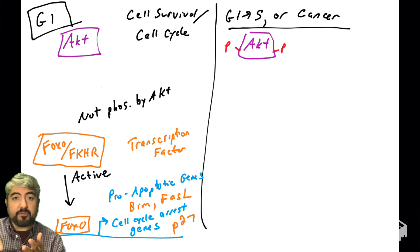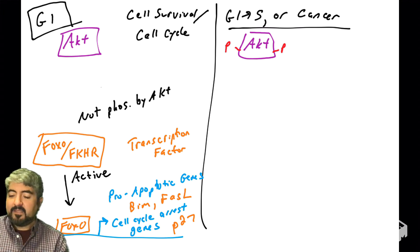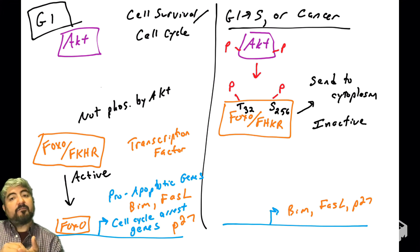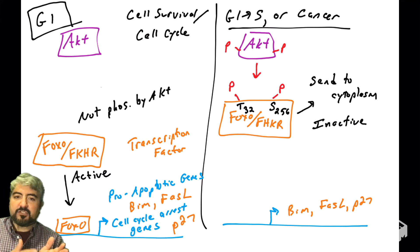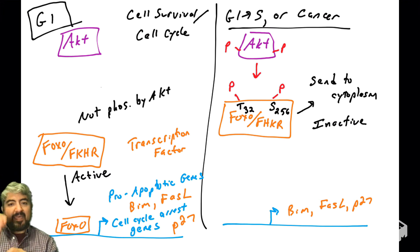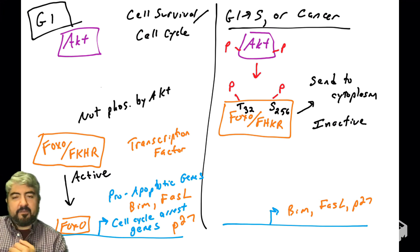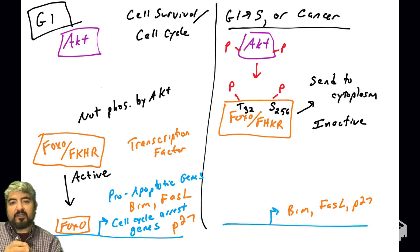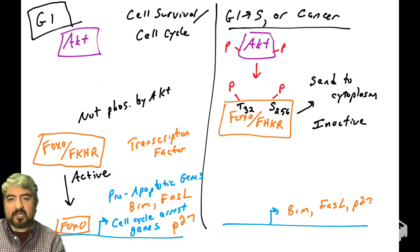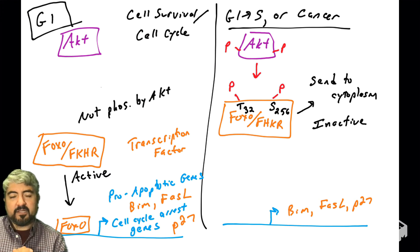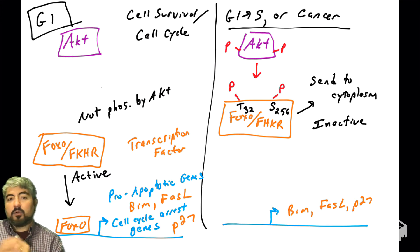When cells get a pro-growth signal — a growth factor, for example — or in many human cancers, AKT is phosphorylated and active, which means it can now phosphorylate FOXO. The sites of phosphorylation on FKHR/FOXO by AKT are threonine 32 and serine 256. When AKT phosphorylates FOXO, that sends it to the cytoplasm. Since the DNA is in the nucleus and FOXO is now in the cytoplasm, FOXO can't function. Relocating FKHR/FOXO into the cytoplasm keeps it in an inactive form.